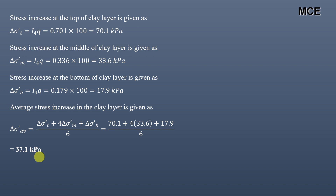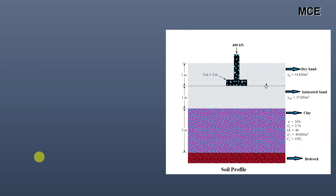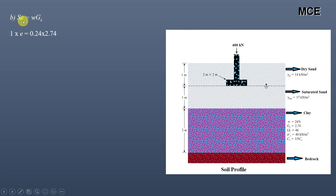Next, we find the consolidation settlement. For saturated clay, void ratio e is found from S·e = w·Gs. With S = 1, w = 0.24, and Gs = 2.74, the initial void ratio e = 0.6576.